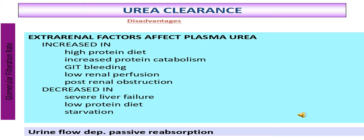Causes of increased blood urea include pre-renal conditions such as dehydration, severe vomiting, intestinal obstruction, diarrhea, diabetic coma, severe burn, fever and severe infection. Renal diseases include acute glomerular nephritis, nephrosis, malignant hypertension, and chronic pyelonephritis. Post-renal causes include stones in the urinary tract, enlarged prostate, and tumors of the bladder.